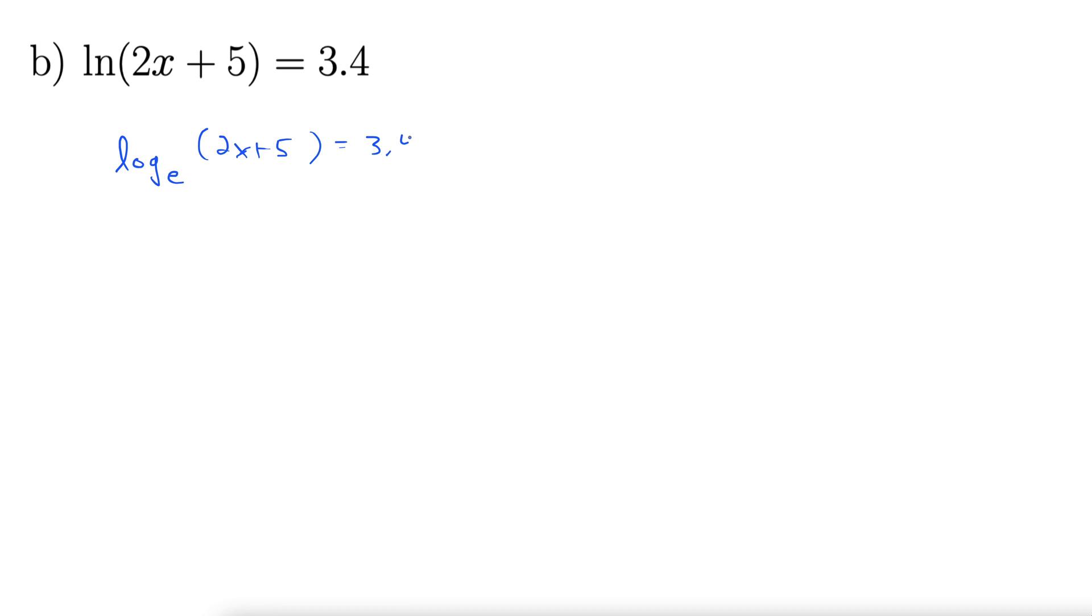And we will convert this to exponential form. So the base stays the base. We go around to the outside for the exponent, back to the inside for the equals. So what this gives in exponential form is the following: e to the power of 3.4, back inside for the equals, equals 2x plus 5.